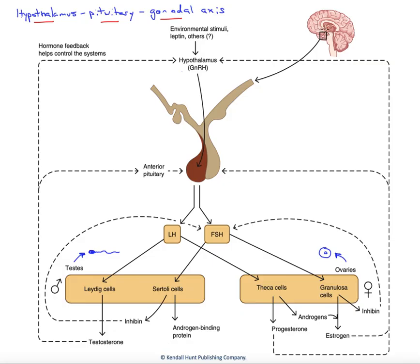At the inferior portion of the brain here, we have the hypothalamus. Directly below that attached is the anterior and posterior pituitary. We're going to focus on the anterior in this case. And then at the bottom here, we've got schematic gonads, the testes in males and the ovaries in females.